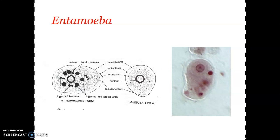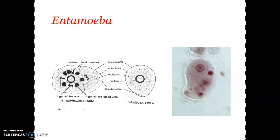Regarding the minuta form, it is the pre-cystic form — before cyst formation. It is smaller and almost spherical. Unlike the trophozoite, it is non-feeding, inactive, non-motile, and non-pathogenic. It resembles the trophozoite in structure except for its smaller size and having less distinct pseudopodial regions. Contractile vacuoles are almost absent in the minuta form. It lives only in the lumen of the intestine and rarely intrudes into the tissues.